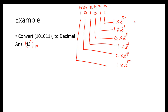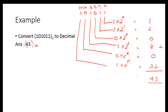Anything to the power 0 is 1, so we get 1. 2 power 1 is 2, multiplied by 1 gives 2. Anything multiplied by 0 is 0. 2 power 3 is 8. Anything multiplied by 0 is 0 again. 2 power 5 is 32. Now add everything together: 32 + 8 + 2 + 1 = 43. The result is 43 in decimal.